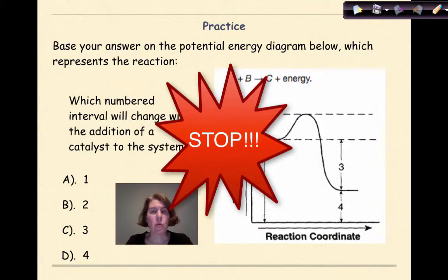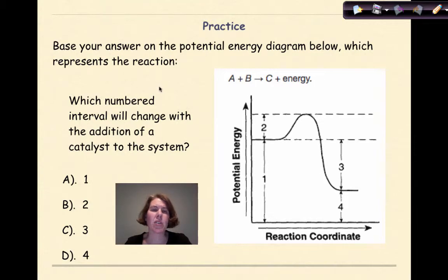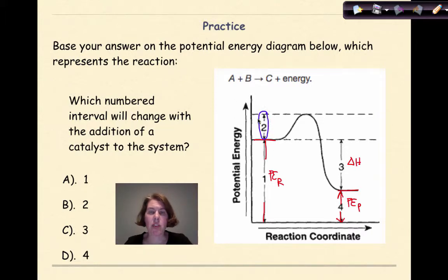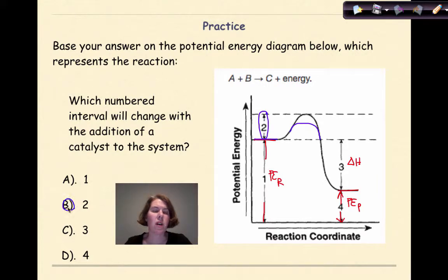Next question: Based on the potential energy diagram, which numbered interval — one, two, three, or four — will change with the addition of a catalyst? Interval one represents the potential energy of the reactants, and interval four represents the potential energy of the products — both are unchanged by a catalyst, so those are out. Interval three represents delta H, the difference between product and reactant potential energies — also unchanged. Only interval two represents the activation energy. Adding a catalyst lowers the activation energy, so two is the correct answer.